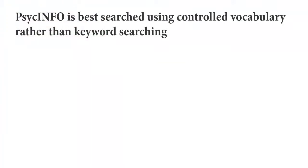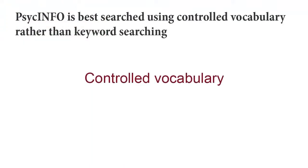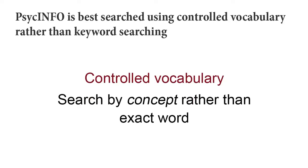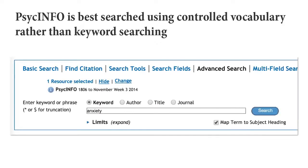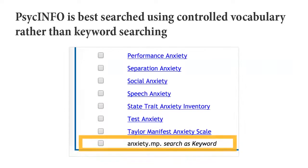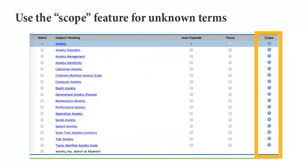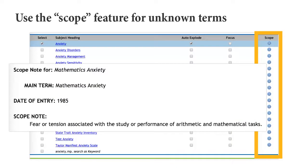One unique feature of PsychInfo is the ability to search for articles using a controlled vocabulary. A controlled vocabulary term searches for the concept rather than the exact word. When you enter a search term into PsychInfo, you will have an option in black text to search for the term as a keyword, as well as options for controlled vocabulary in blue text. More often than not, you will want to use the controlled vocabulary term in blue. If you aren't sure what a term means, use the scope or the little eye button to get a definition of the term.